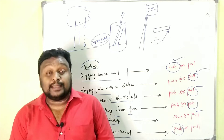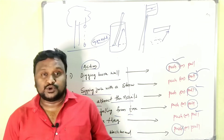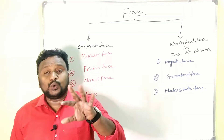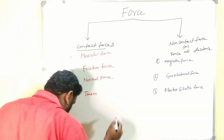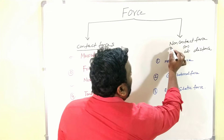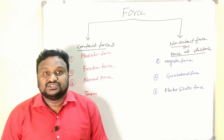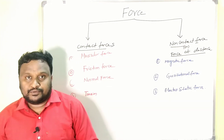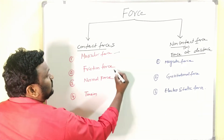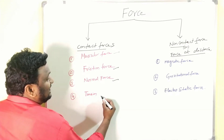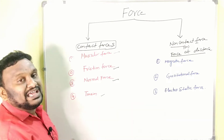Now let's discuss types of force. Force can be divided into two types: contact forces and non-contact forces. Under contact forces we have muscular force, frictional force, normal force, and tension. The question should be like: among the following, which is an example of contact force? You have to remember which forces come under contact forces and which come under non-contact forces.